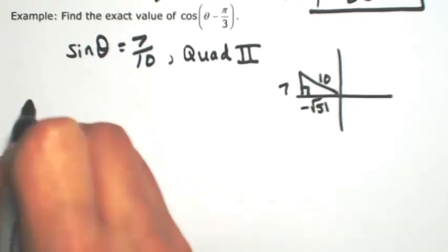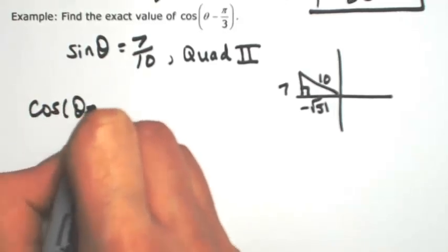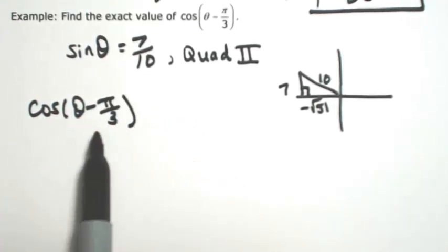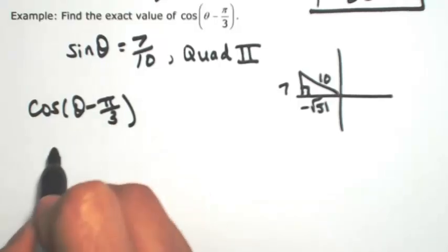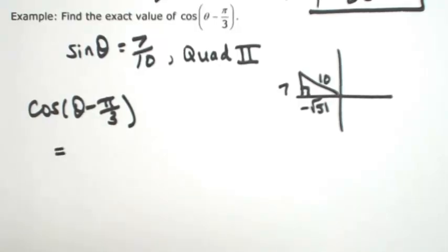Okay, so if I want to find the cosine of theta minus pi over 3, first thing I need to recognize is that these are just simply both angles. So I'm going to use the difference formula for cosine.